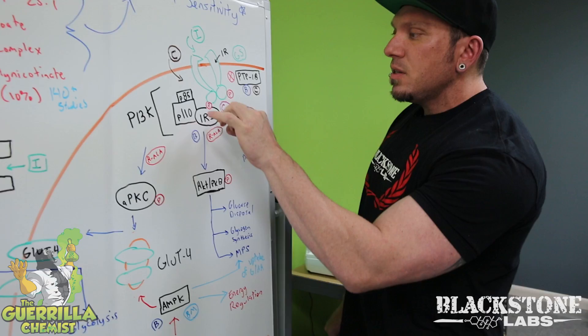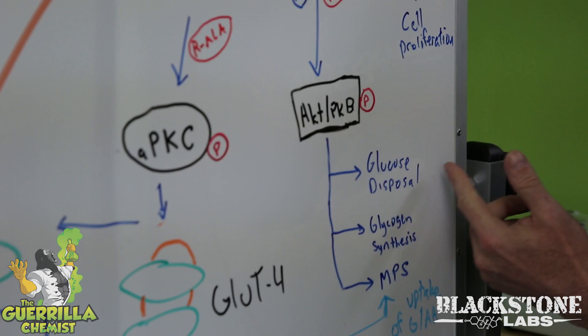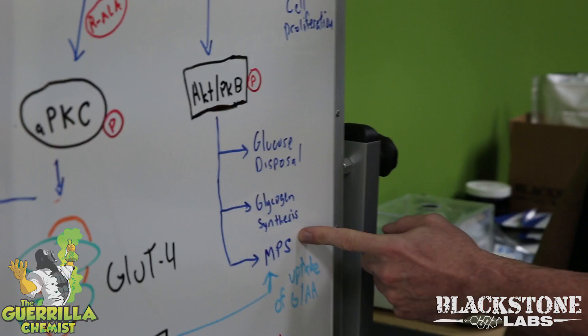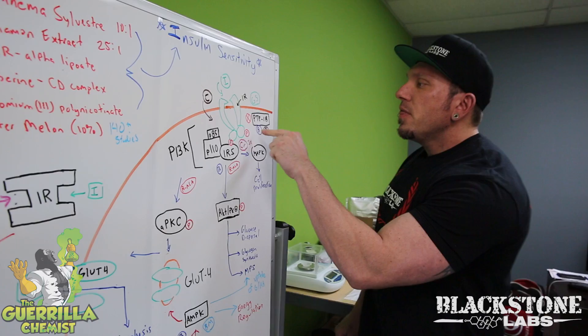Insulin also activates another pathway through the insulin receptor substrate: the AKT protein kinase B pathway. This part of the pathway is responsible for glucose disposal, glycogen synthesis, and total muscle protein synthesis. This is where we want to be — building muscle and storing glycogen, so we're pushing the pathway this way.